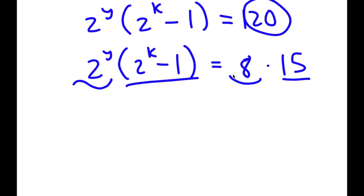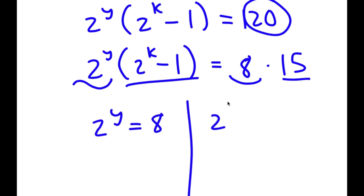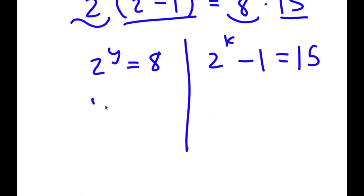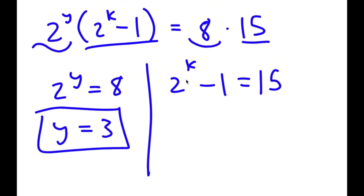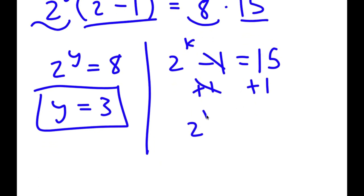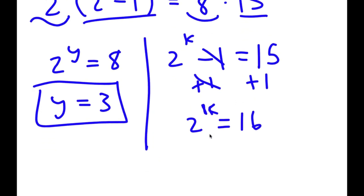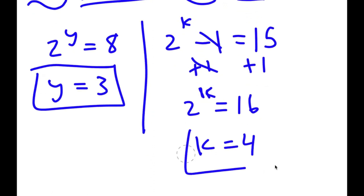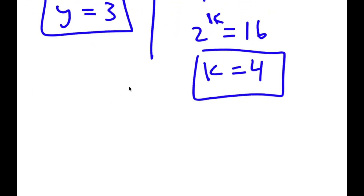This means 2 to the power of y is equal to 8, and 2 to the power of k minus 1 is equal to 15. For 2 to the power of y equals 8, y equals 3, because 2 to the power of 3 is 8. For 2 to the power of k minus 1 equals 15, adding 1 on both sides gives 2 to the power of k equals 16, meaning k is 4. So x equals k plus y, meaning x equals 4 plus 3, which is 7.